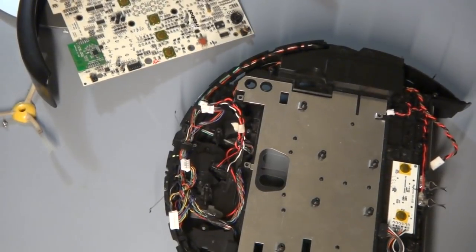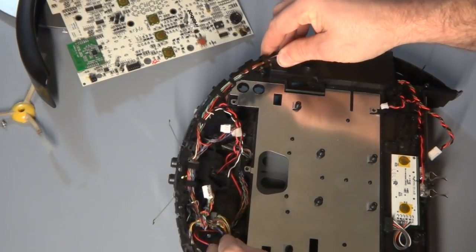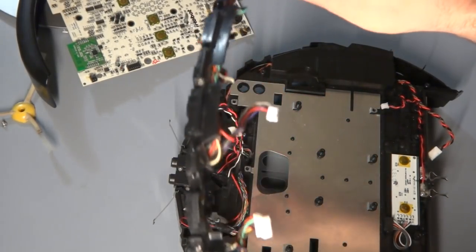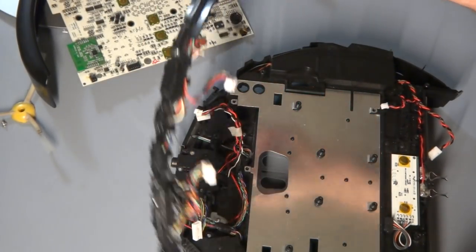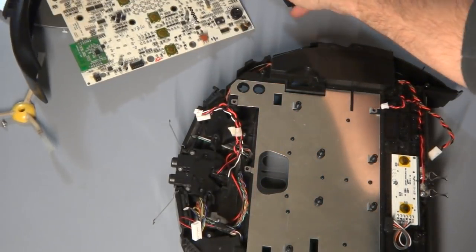Alright. Now you got the IR array system here, which you want to just kind of get out of the way too. Just lift it up. It shouldn't be screwed or anything. It's just all loose. It just slides in. So go ahead and remove that out of the way.